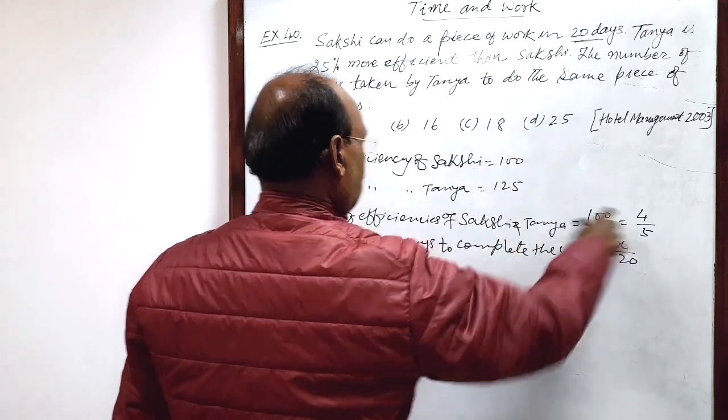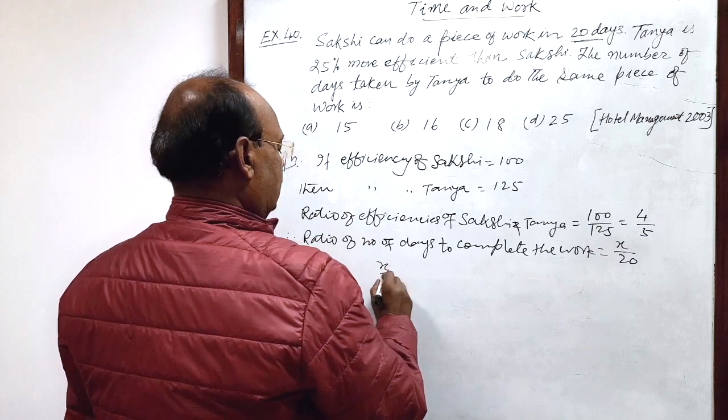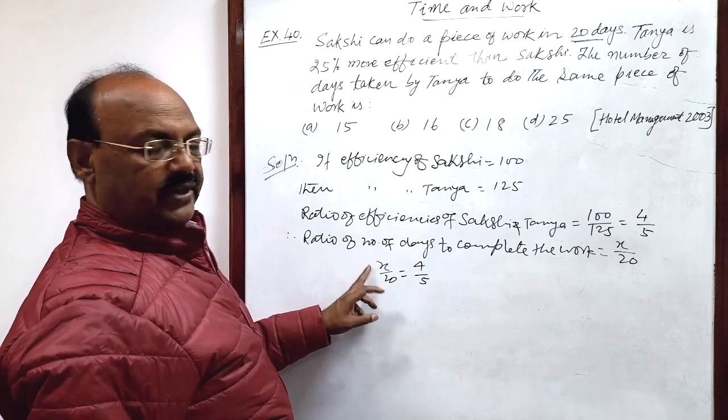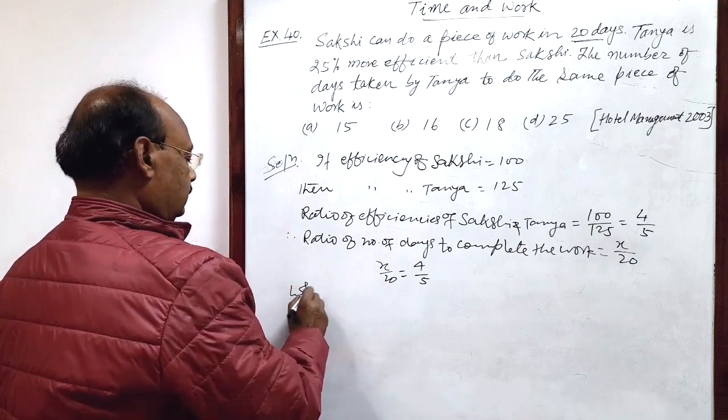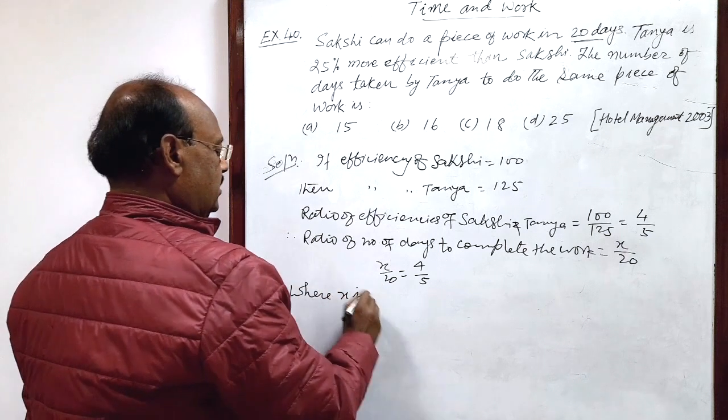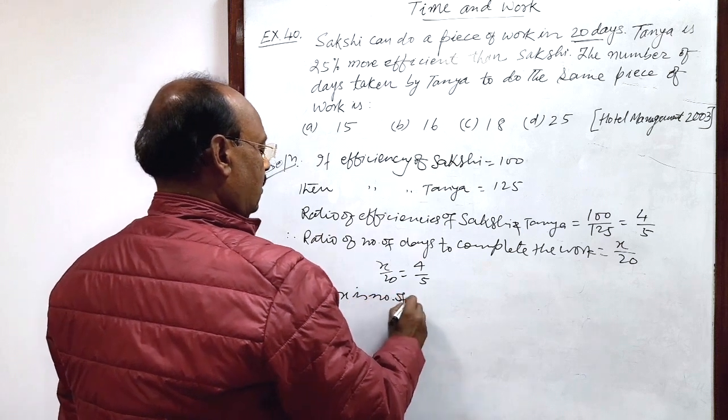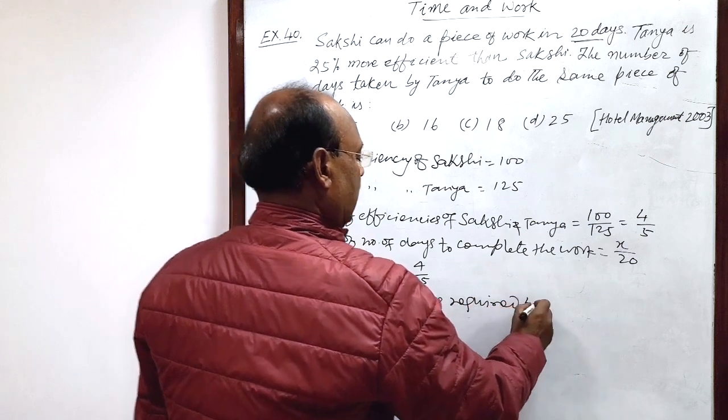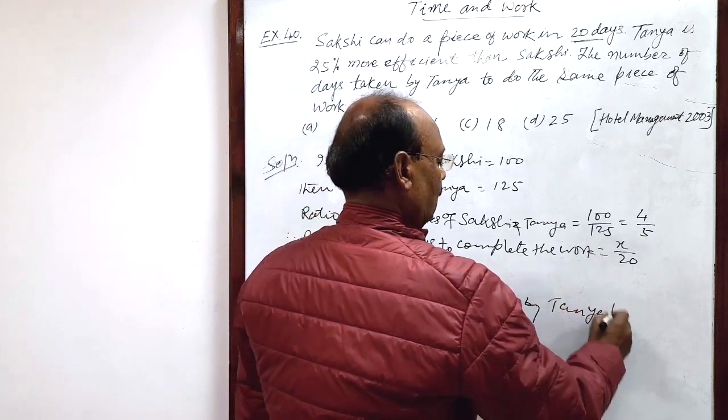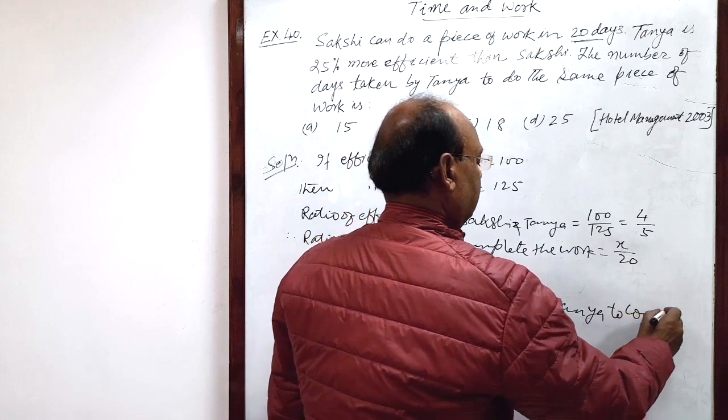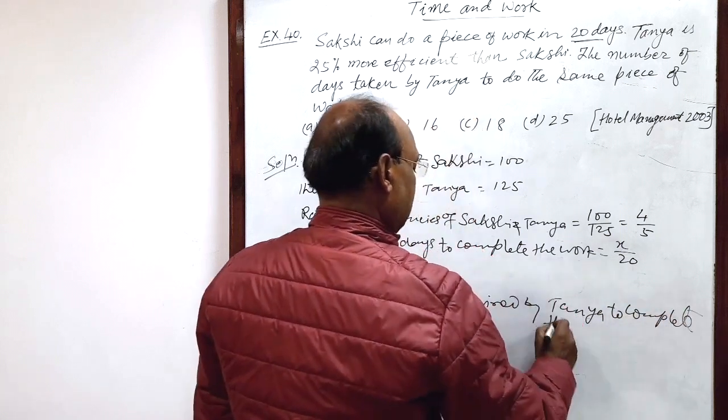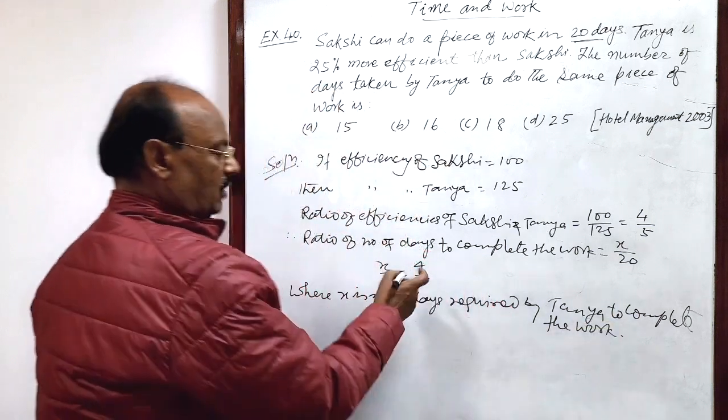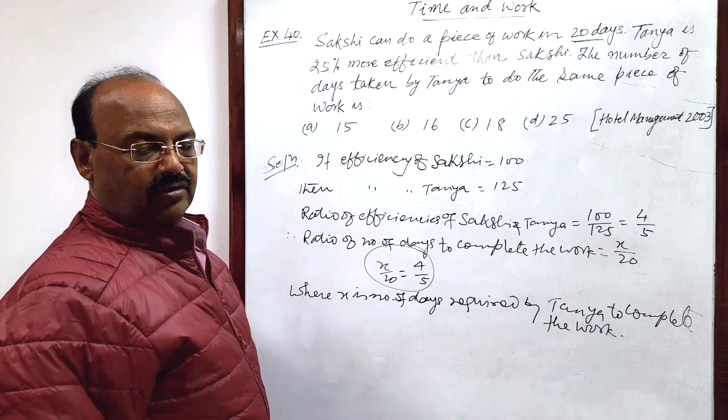And these two will be equal, means x by 20 is equal to 4 by 5. So x is the number of days required by Tanya to complete the work. So by solving it, we can get the value of x that will be the answer.